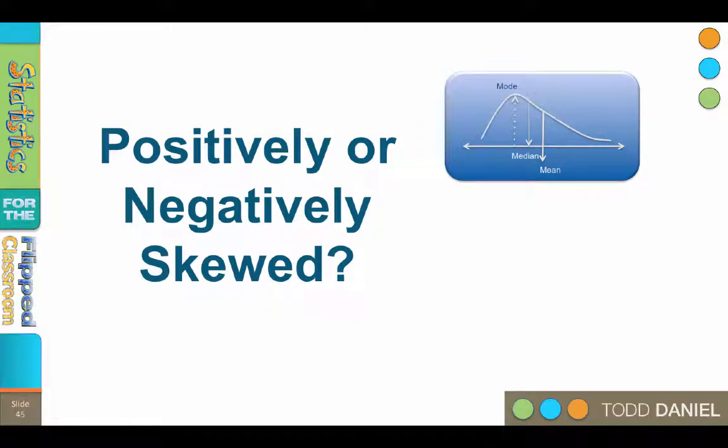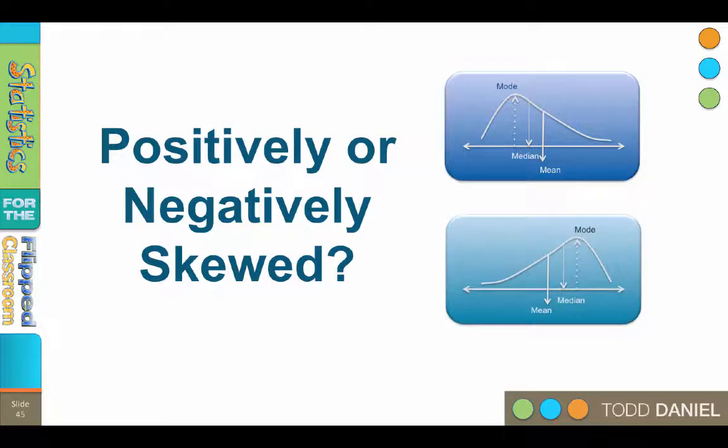Here are two curves. This first one is positively skewed, and the second is negatively skewed. The top curve is positively skewed because the tail is pulled out on the right, or the positive direction of the number line. The bottom curve is negatively skewed. The tail is pulled out on the negative, or left end of the number line.